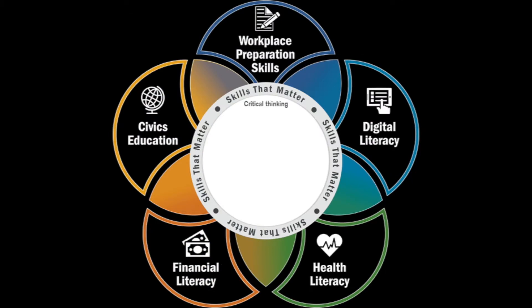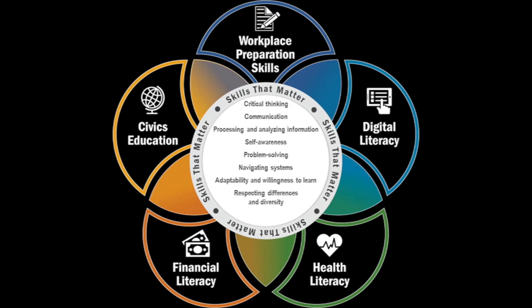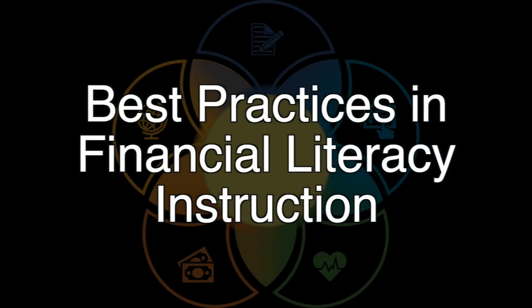The TSTM skills — including critical thinking, communication, processing and analyzing information, self-awareness, problem-solving, navigating systems, adaptability and willingness to learn, respecting differences and diversity, and interpersonal skills — all help students make informed decisions about financial obligations, budgeting, credit, debt, and planning for the future. Let's take a look at how Stephanie Summers uses these best practices with students in her classroom.